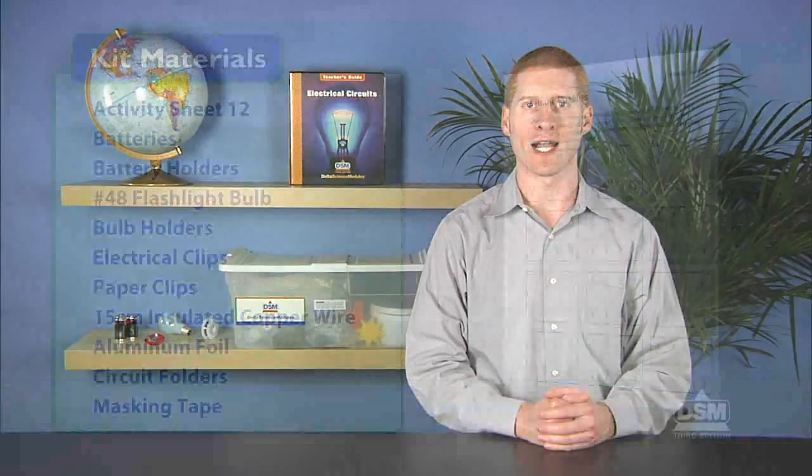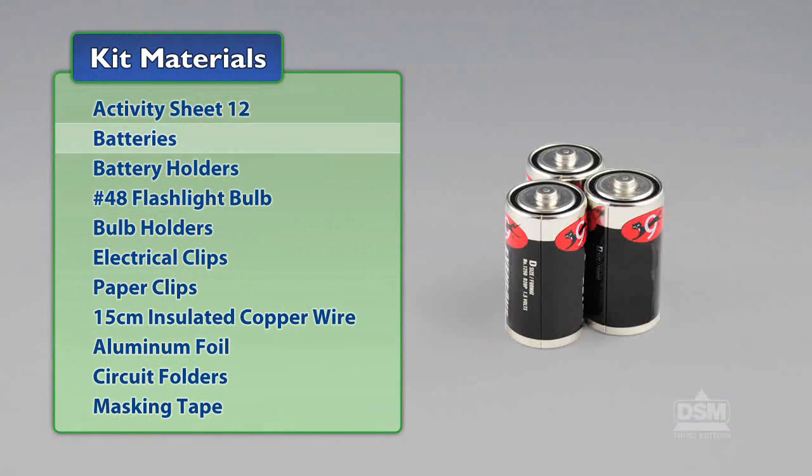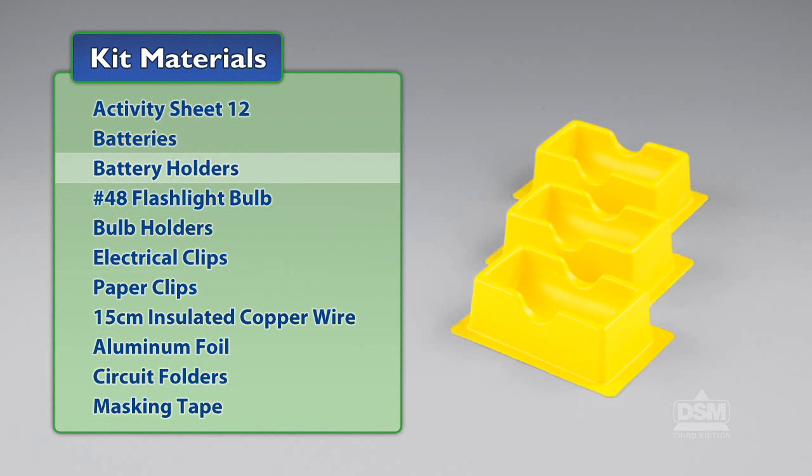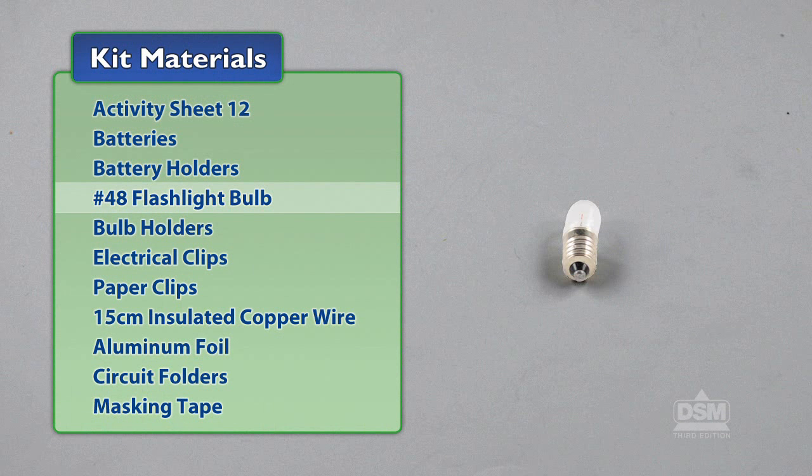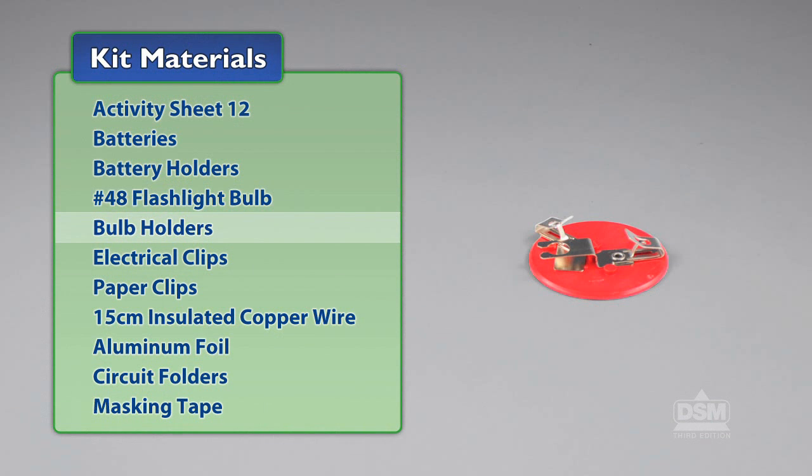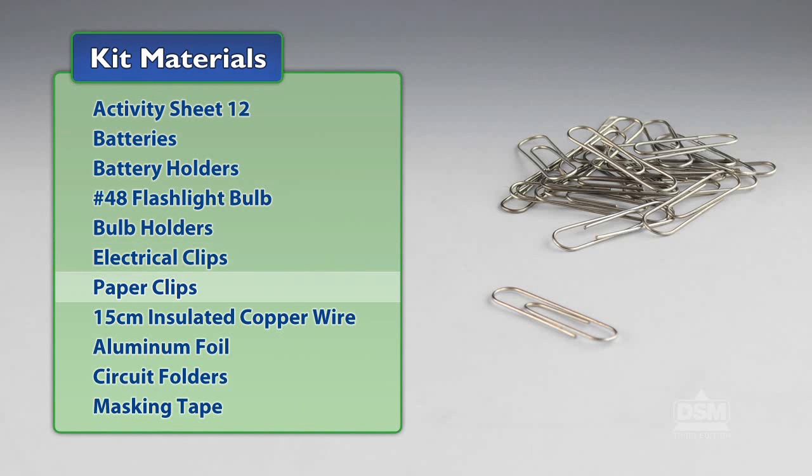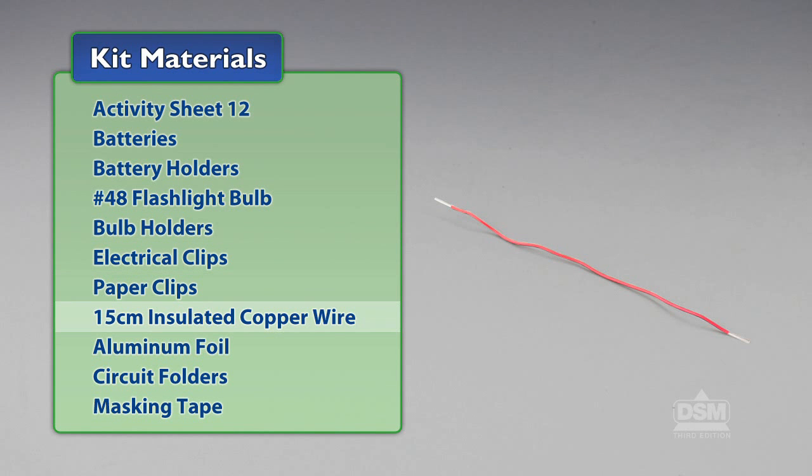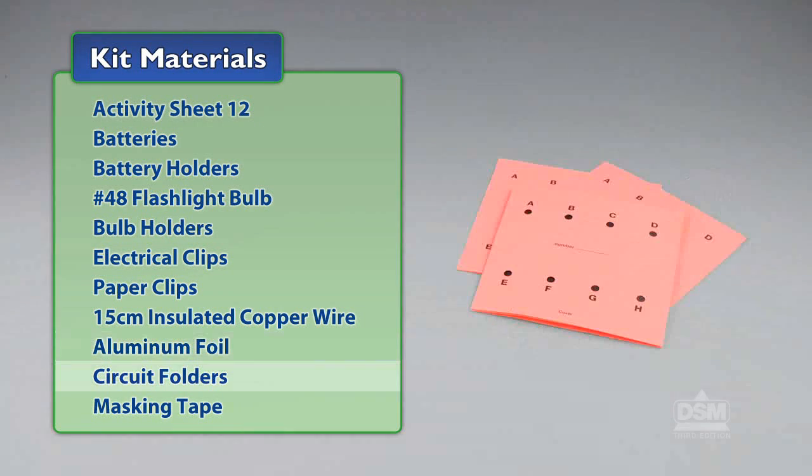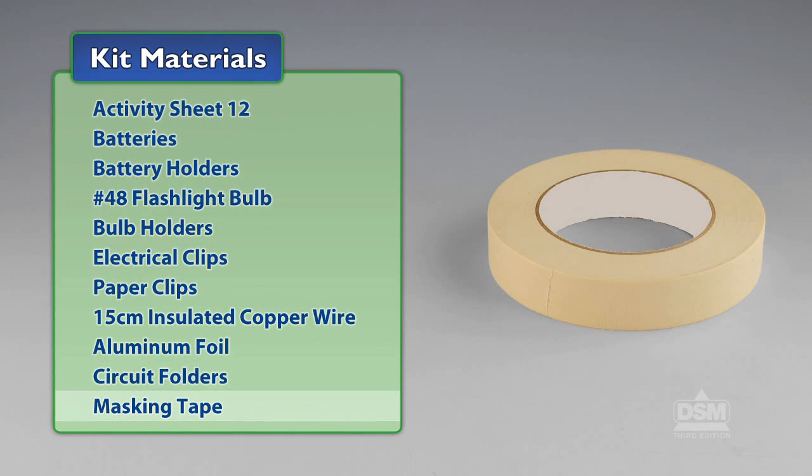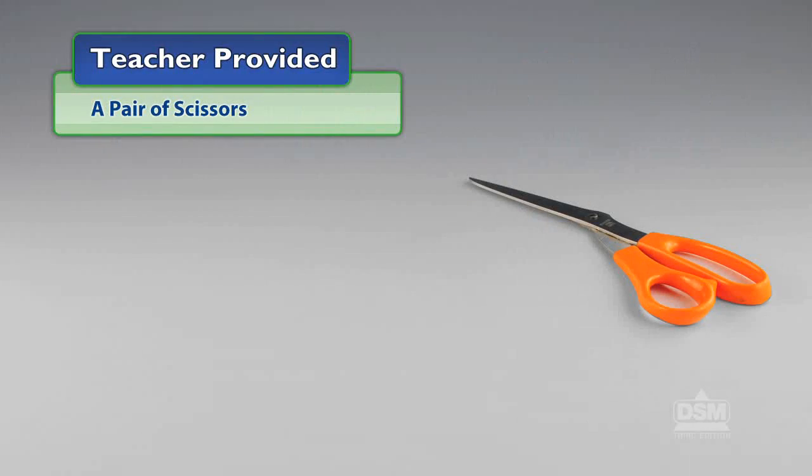You will need the following materials from the kit: Activity sheet 12, batteries, battery holders, number 48 flashlight bulbs, bulb holders, electrical clips, paper clips, 15 centimeter insulated copper wire pieces, aluminum foil, circuit folders, and masking tape. You will also need to provide a pair of scissors.